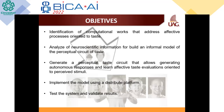The objectives of our work are: first, the identification of computational works that address affective processes oriented to taste; then, analyze neuroscientific information to build an informal model of perceptual circuits of taste; then generate the perceptual taste circuit that allows generating autonomous responses and learn effective taste evaluations oriented to perceive stimuli; after that, implement the model using a distributed platform; and finally, validate the system and the results.